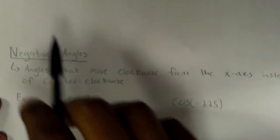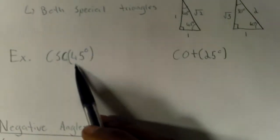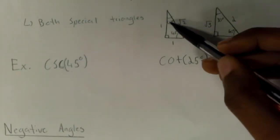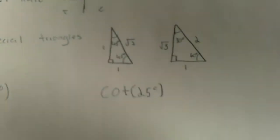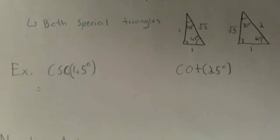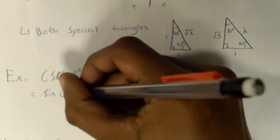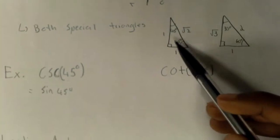Okay, the first example is cosecant of 45 degrees. And because it's 45 degrees, we know that it's in one of the special triangles. So the first thing that you do is you change it back to sine of 45 degrees. And then you solve for that from the triangle.